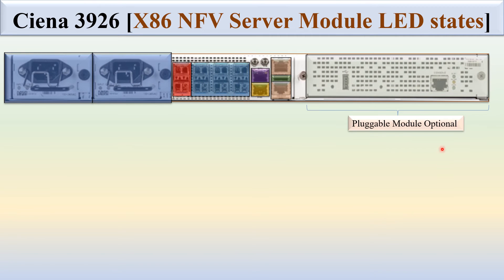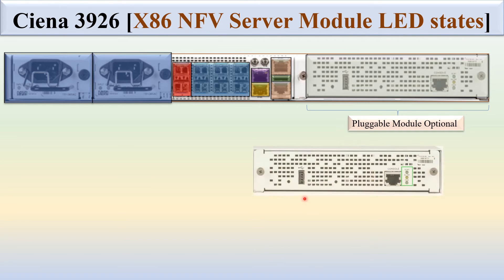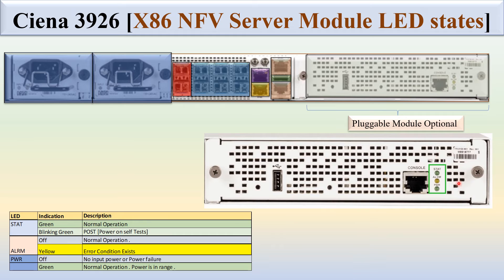If we put the X86 NFC server module in this slot, there are three LEDs: state, alarm, and power. If state is green, it means normal operation. If blinking green, it is in power-on self-test. If alarm is off, it is normal operation. If yellow, an error condition exists. For power: if off, it means no input power, power failure, or an internal failure condition occurred. If green, it means normal operation and power is within the specified range.